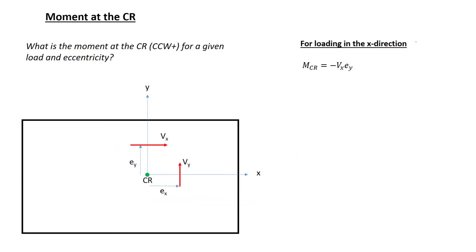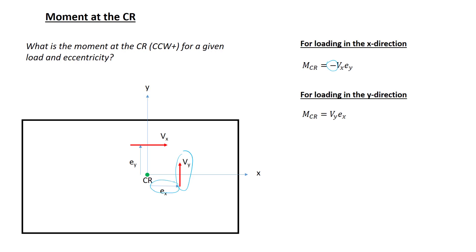Next, we need another building block: what is the actual moment at the center of rigidity for a given load and eccentricity? I've shown story shears in the x and y direction, as well as eccentricities in the x and y direction, all indicated positive. For loading in the x direction, the applied story shear in the positive x direction multiplied by an eccentricity in the positive y direction results in a clockwise moment, hence a negative sign. For loading in the y direction, a positive force in the y direction acting over a positive eccentricity in the x direction causes a counterclockwise or positive moment, hence a positive sign.